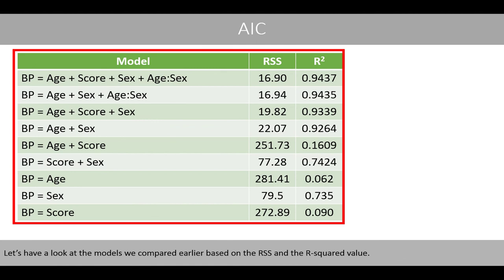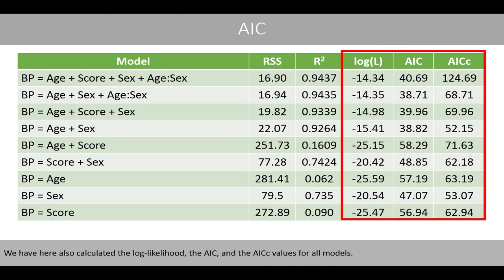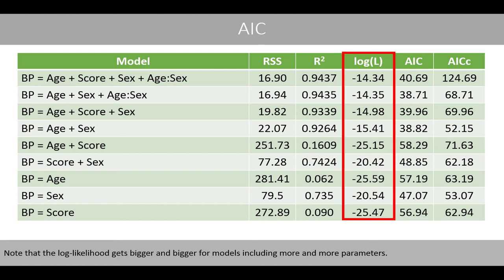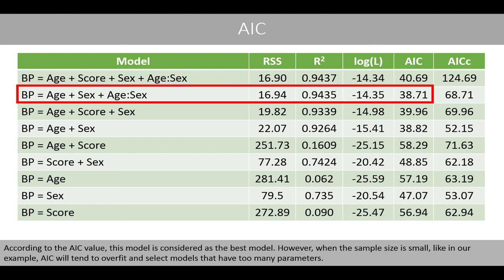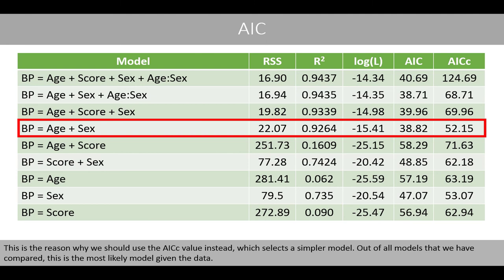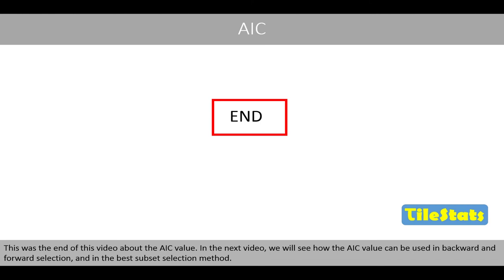Let's look at the models we compared earlier based on residual sum of squares and R-squared, now also showing the log likelihood, AIC, and AICc values for all models. Note that the log likelihood gets bigger and bigger for models including more and more parameters. According to the AIC value, a certain model is considered best. However, when the sample size is small — like in our example — AIC tends to overfit and select models with too many parameters. This is why we should use the AICc value instead, which selects a simpler model. Out of all models compared, the model selected by AICc is the most likely model given the data. This was the end of this video about the AIC value. In the next video, we will see how the AIC value can be used in backward and forward selection and in the best subset selection method.